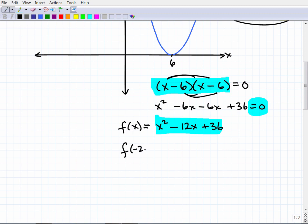So f(-2x), got to be careful here with these negatives, right? So just use parentheses, (-2x)² - 12(-2x) + 36.